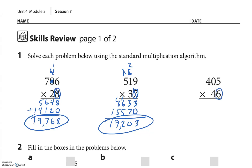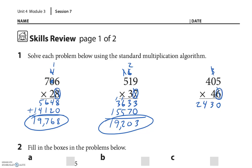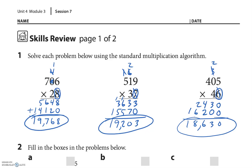Starting with that 6: 6 times 5 is 30 — put the 0, carry 3. 0 times 6 is 0 plus 3 is 3. 4 times 6 is 24 — no place to carry, so cross off my carrying number and my 6, put a placeholder. 5 times 4 is 20 — put the 0, carry 2. 0 times 4 is 0 plus 2. 4 times 4 is 16. So I have a 0, a 3, a 6, an 8, and a 1 — answer: 18,630.